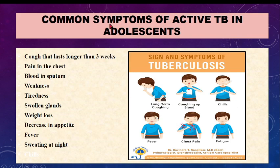Symptoms of active TB in adolescents include: cough lasting longer than three weeks, coughing of blood, chills, fever, chest pain, and fatigue. Additional features include weakness, tiredness, swollen glands, weight loss, decreased appetite, fever, and sweating at night.